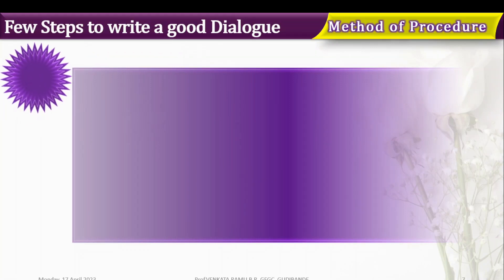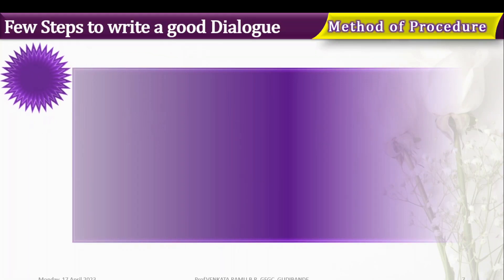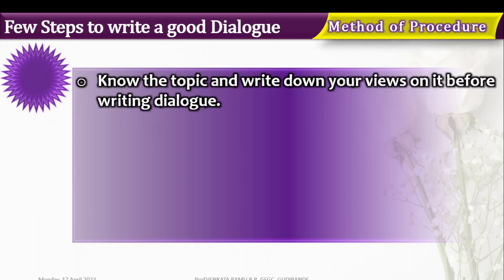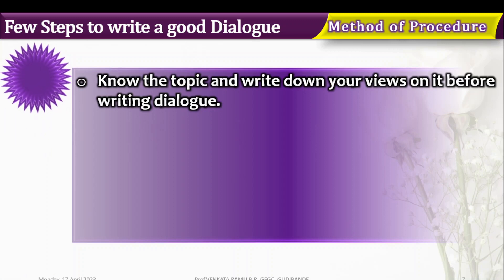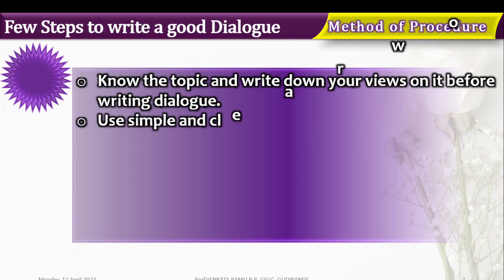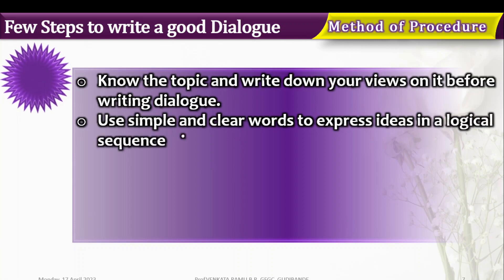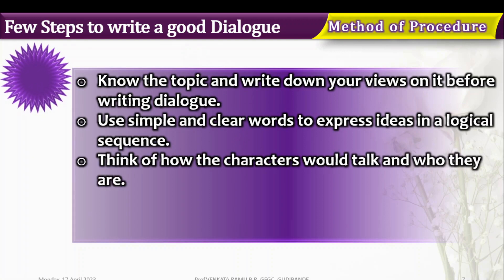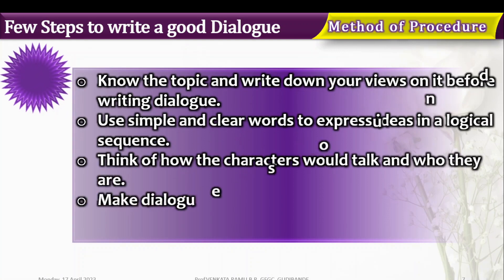Now let us know a few steps to write a good dialogue — the method or procedure. Before writing a dialogue, the writer must know the topic and write down their views on it. Use simple and clear words to express your ideas in a logical sequence. Think of how the characters would talk and what they feel.